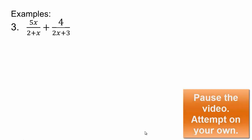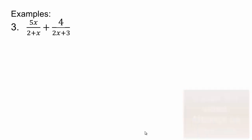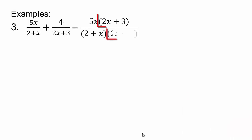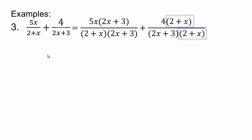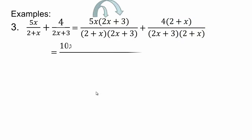Pause the video here, do this problem on your own, and then check your answer. To make equivalent fractions, the first one gets multiplied by 2x plus 3, and the second one gets multiplied by 2 plus x. So this one needs the 2x plus 3, this one needs 2 plus x, and then use the distributive property and multiply.